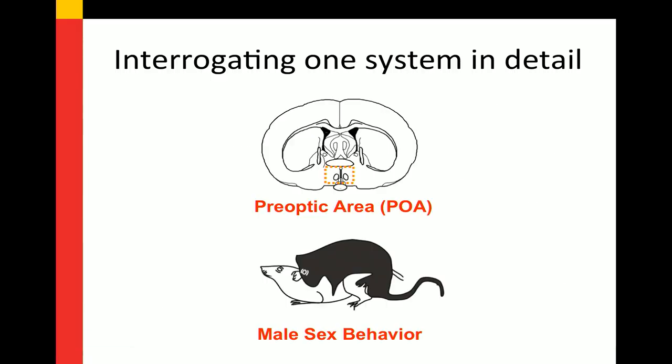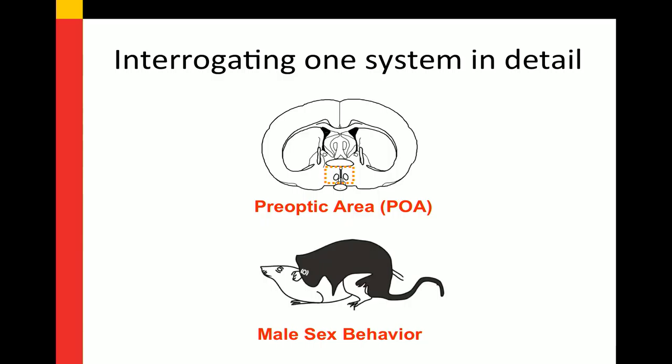The readout of brain sex I've been using for the past 20 years is sex behavior, while interrogating one system in great detail: the preoptic area of the brain. Preoptic has nothing to do with vision — it just happens to be pre to the optic chiasm. It's a rather small region, rostral to the hypothalamus but telencephalic in origin. It is the essential brain region for the ability to express male sex behavior. If you lesion this region, males lose all interest in sex; if you stimulate it, males lose all interest in anything but sex.